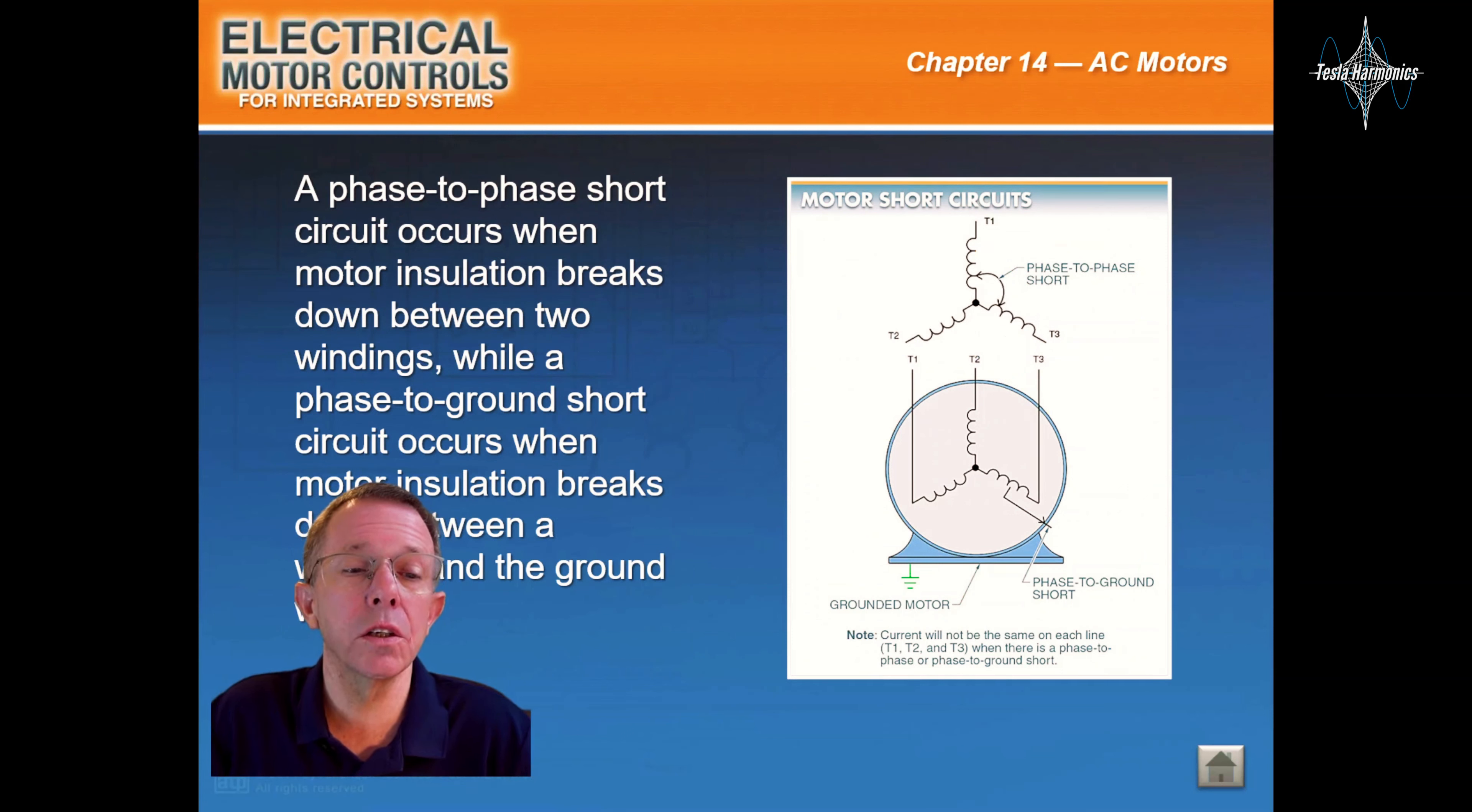A phase to phase short circuit occurs when motor insulation breaks down between two windings, while a phase to ground short circuit occurs when motor insulation breaks down between a winding and the ground wire.